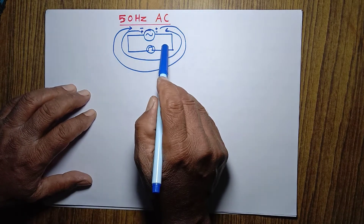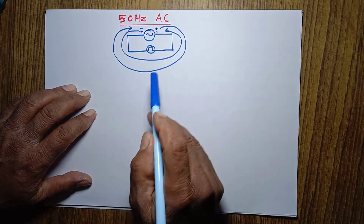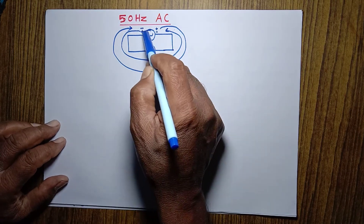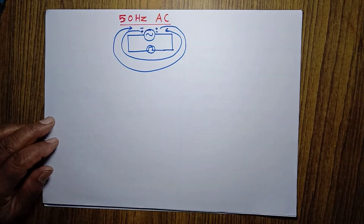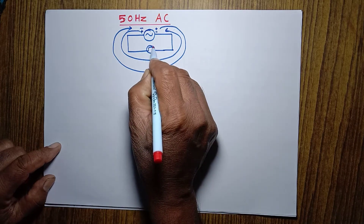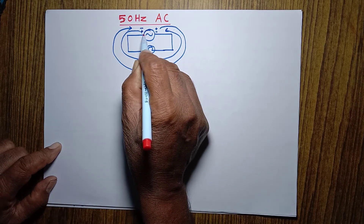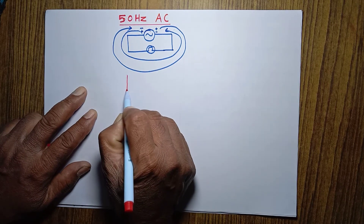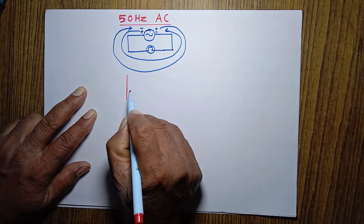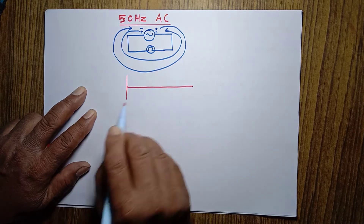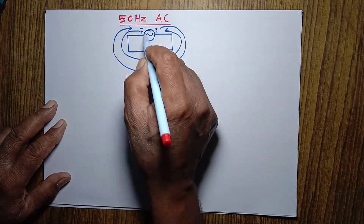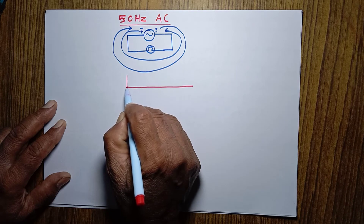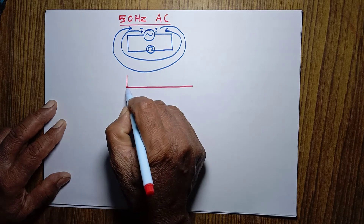Now, how many times does the direction of current change? Let's talk about this. When current starts from this point, at first the current here is zero, which can be represented graphically. This is a graph to represent the alternating current. When there is no current in the bulb, the current is at the zero position.